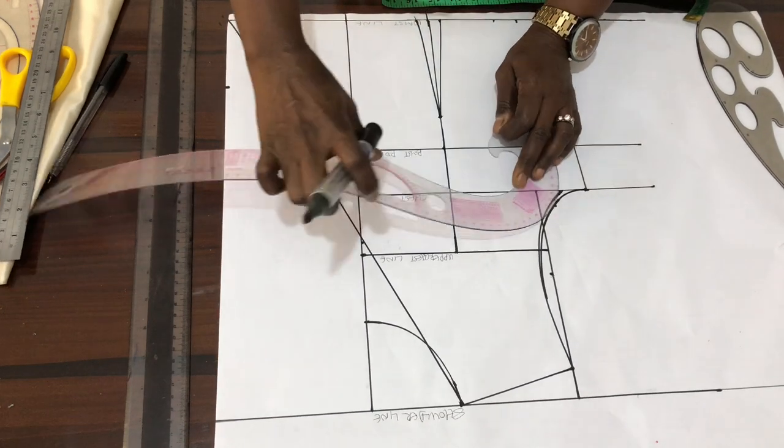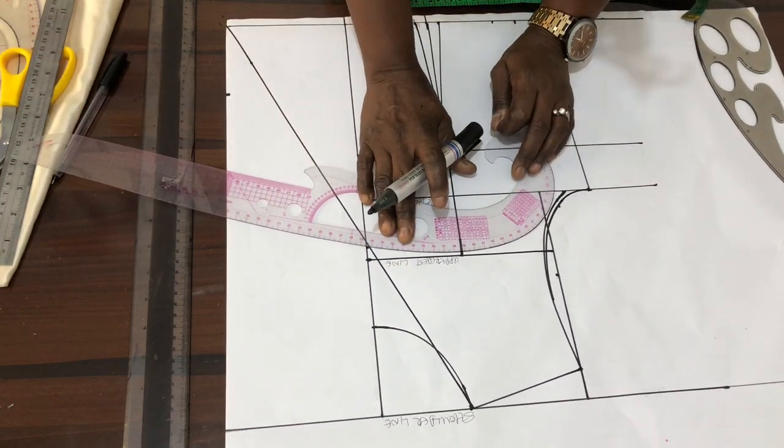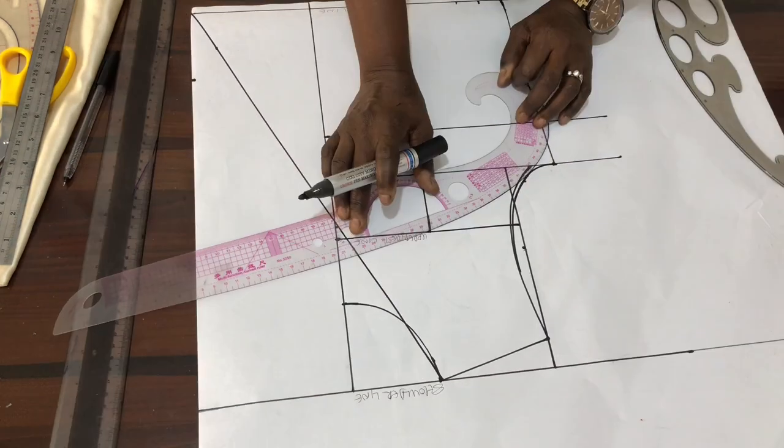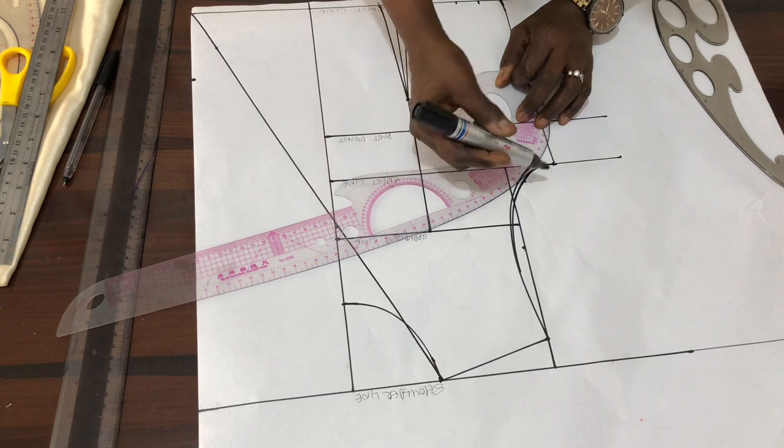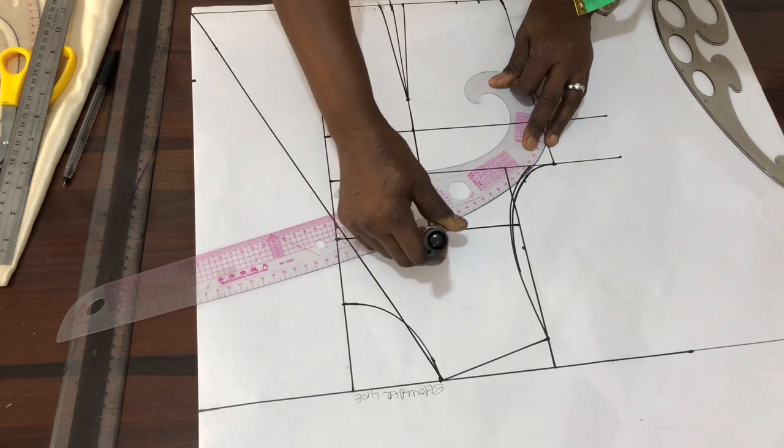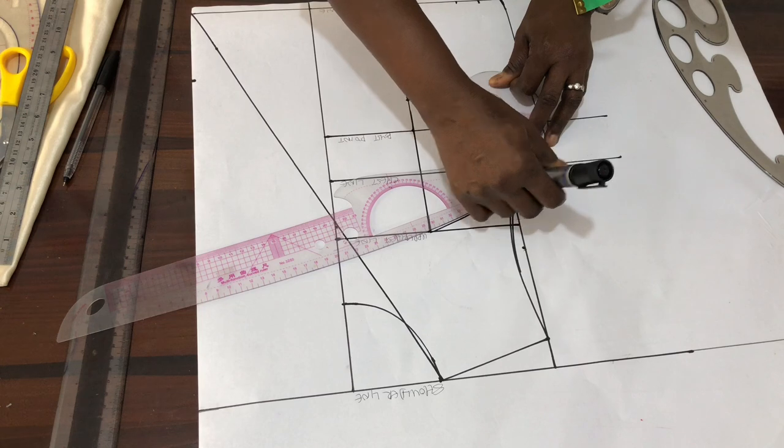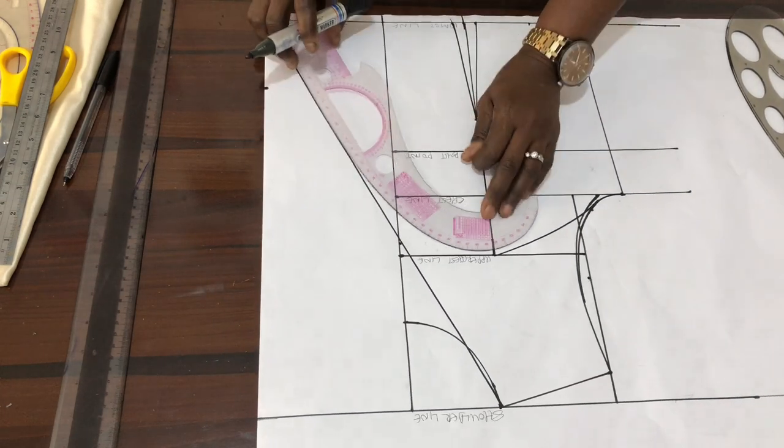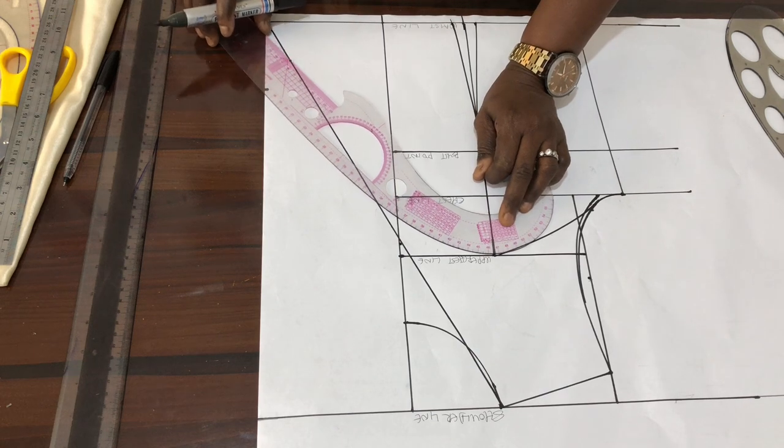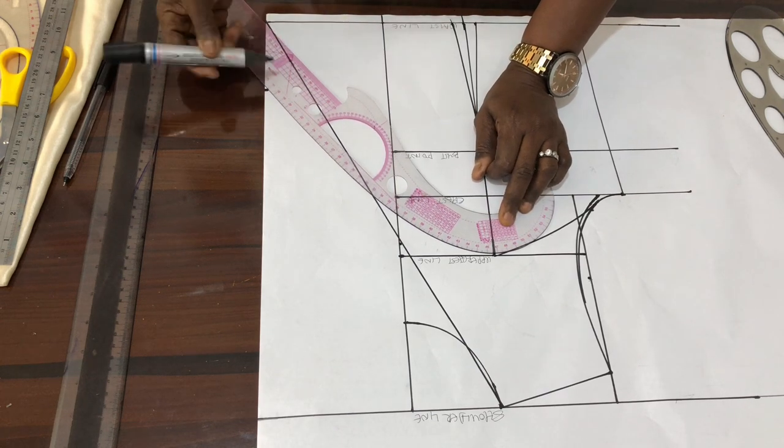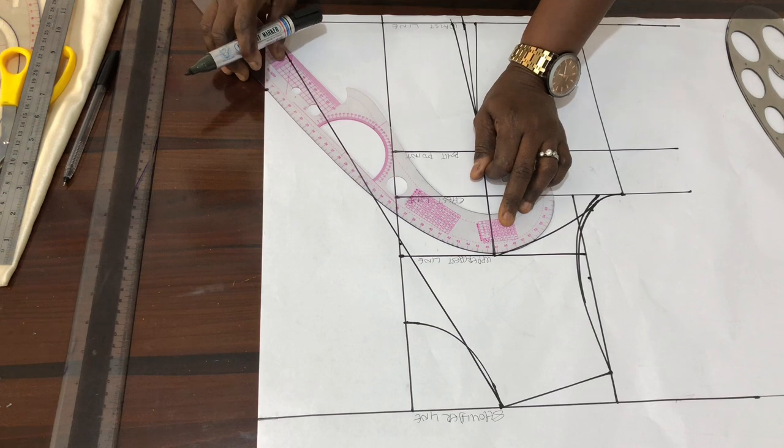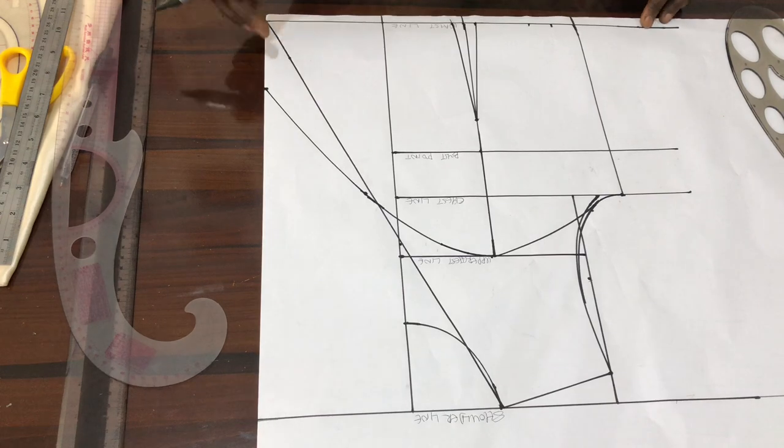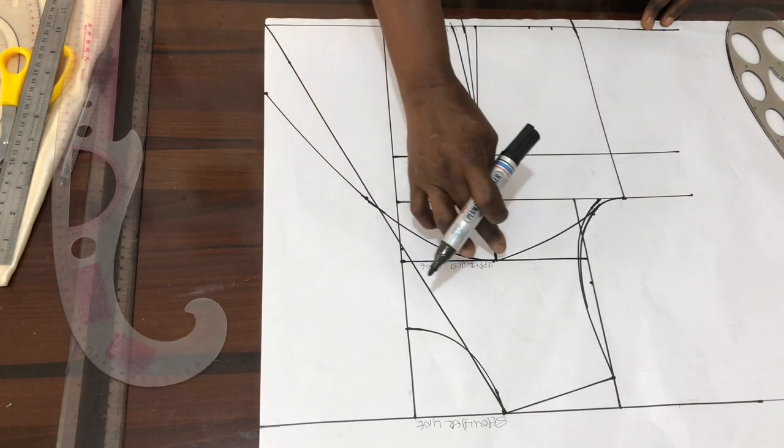So, the next thing we have to do is to shape the neckline now. So, you place your cuff this way. I'm trying to see the appropriate position. You ensure it hits the armhole here. Then, you take this way. This one is coming to hit this under bust length. Yes.